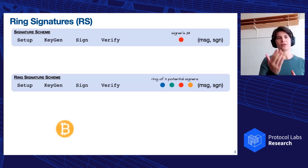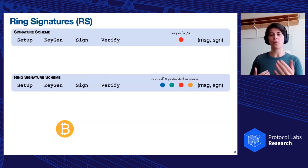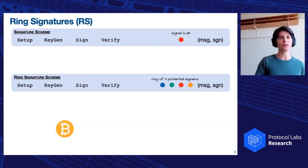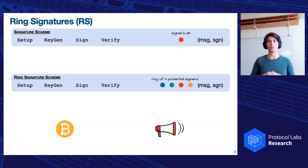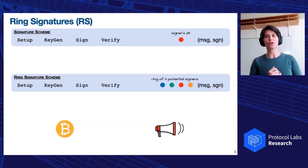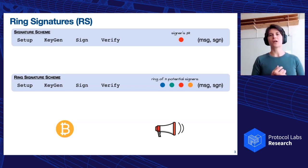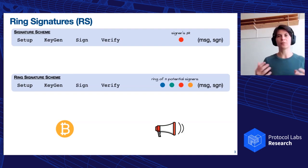In 2001, Rivens, Shamir, and Tauman have proposed the notion of ring signature. So the algorithms are exactly the same, except that the verification procedure, instead of taking one single public key as input, it will take a ring, a group of public keys. It's called a ring just for historical reasons. But essentially, I will have a set of n potential signers, and what the signature is telling me is proving that one of the signers has signed this message and produced a signature, but it doesn't tell me which of those signers is doing so.